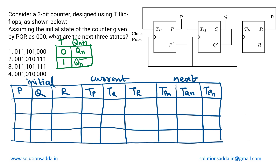This is a digital logic question based upon counters. We have a 3-bit counter designed explicitly using T flip-flops, as shown. There are three T flip-flops connected to each other — TP, TQ, and TR — forming a counter. We assume the initial state given by PQR is triple zero; all inputs are zero at the start. We need to determine the next three states of this counter.